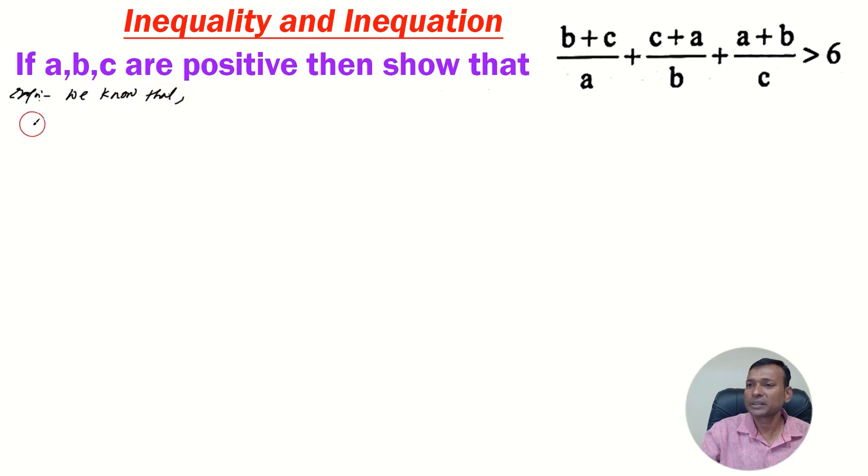We know that a minus b whole square is always greater than 0 because the square of any number is always positive. Now, a minus b whole square is a square minus 2ab plus b square. This is also greater than 0. This implies a square plus b square is greater than 2ab.